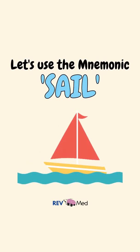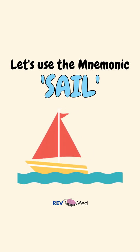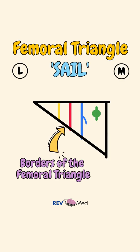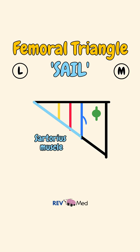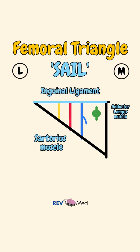Now let's use the mnemonic SAIL to label the contents of the femoral triangle. SAIL represents the borders of the femoral triangle: S for sartorius muscle, representing the lateral border; A for the adductor longus muscle on the medial border; and IL represents the upper border, which is the inguinal ligament.